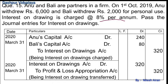Anu withdrew on 1st October, so interest is charged for 6 months. Anu's interest: 6000 × 8/100 = rupees 480 for the full year; for 6 months = rupees 240. For Bali: 2000 × 8/100 = rupees 160 for the full year; for 6 months = rupees 80. Total interest on drawings = rupees 320, transferred to profit and loss appropriation account.